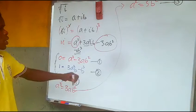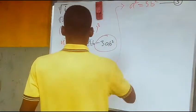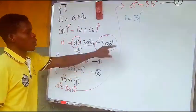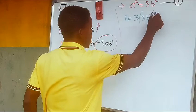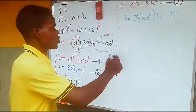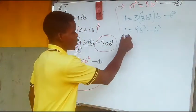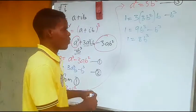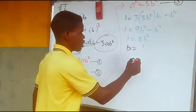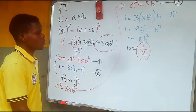Now substituting the value of a squared from equation three into equation two, we get one equals three times three b squared times b minus b cubed, which becomes one equals nine b cubed minus b cubed, so one equals eight b cubed. Solving for b: taking the cube root of both sides, the cube root of one is one and the cube root of eight is two, so b equals one over two.